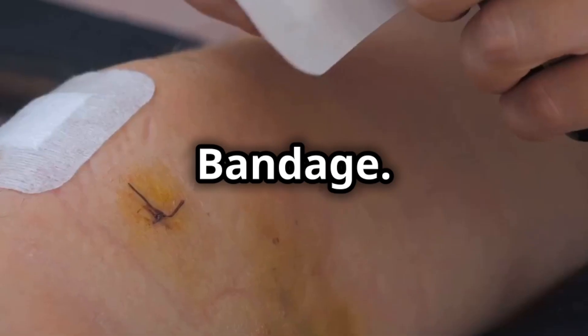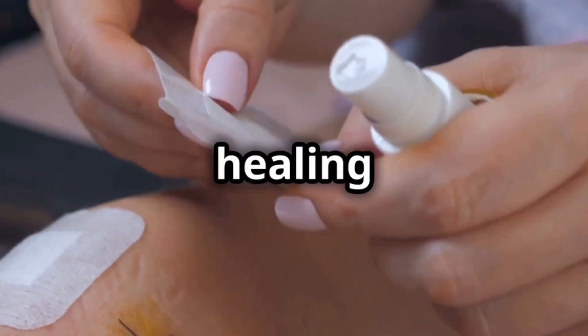Fourth, the nanoskin bandage. Think of it as a second skin that speeds up healing and fights off infections, perfect for your next scrape or cut.